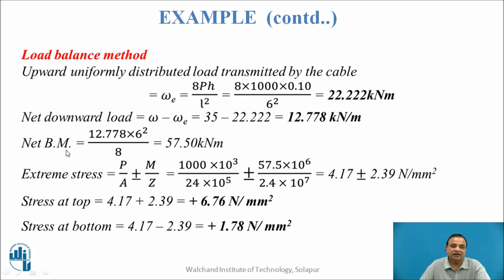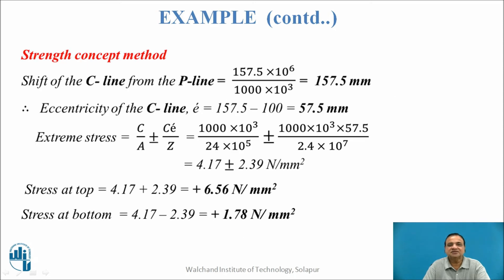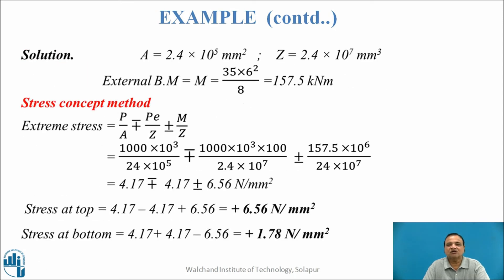For the load balancing concept, we consider the net bending moment: net load into L squared upon 8, which gives 57.5 kN·m. Extreme stresses are P by A ± M by Z, since the net moment induces bending compression at top and tension at bottom. This gives stress at top as 6.67 N/mm² and stress at bottom as 1.78 N/mm², the same as the strength concept and stress concept results.